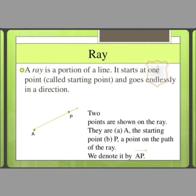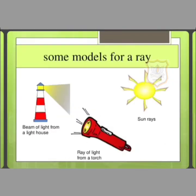For example, two points are shown on the ray. They are first A, the starting point, second B or P, a point on the path of the ray. We can denote it by ray AP. Here are some examples for a ray: first, beam of light from a lighthouse; second, ray of light from a torch; and third, sun rays.